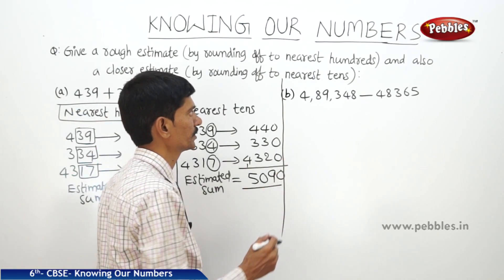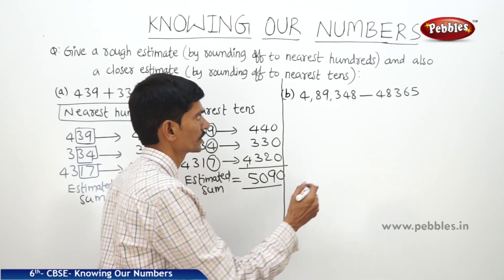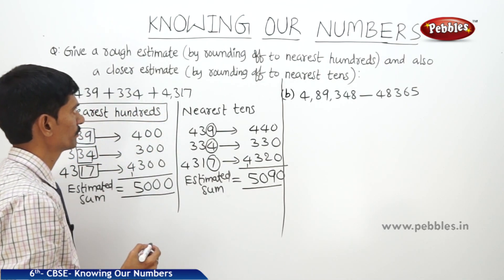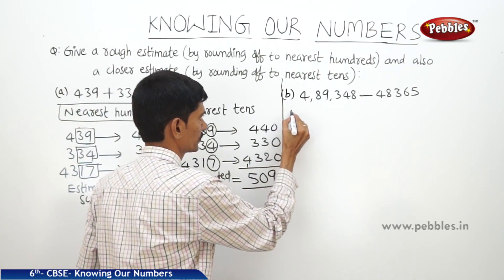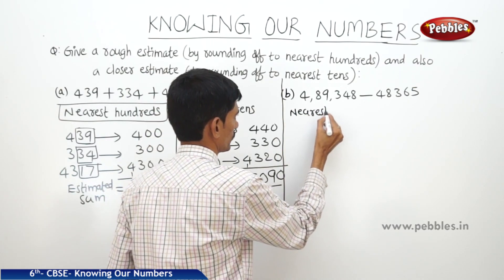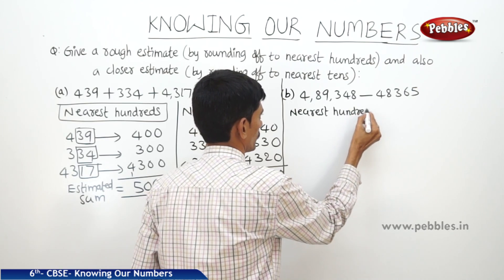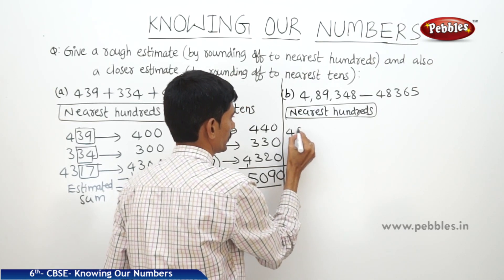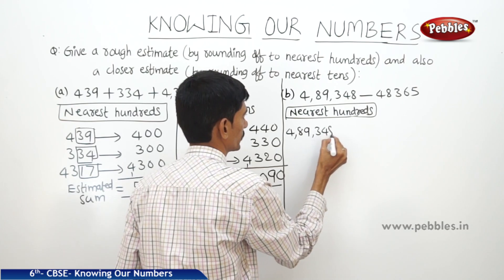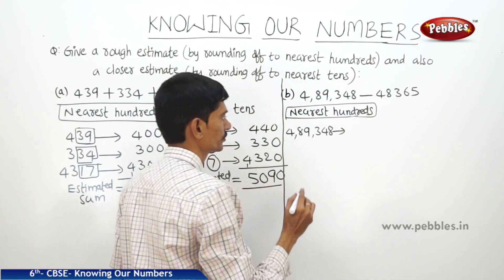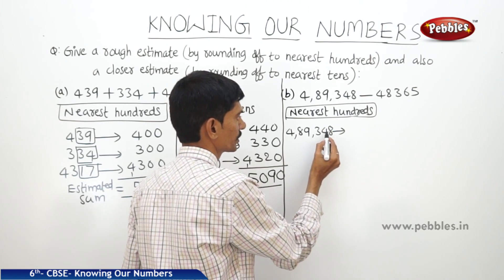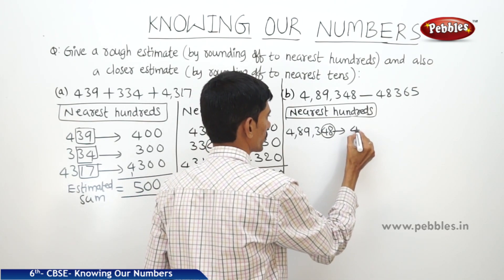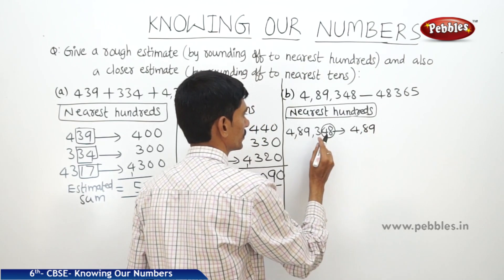Now the second question: 4,89,348 minus 48,365. First let us estimate the difference of those two numbers to the nearest hundreds. So 4,89,348 rounds off — if you round off to the nearest hundreds, we take 48 so it is less than 50. So then we take 4,89,300.